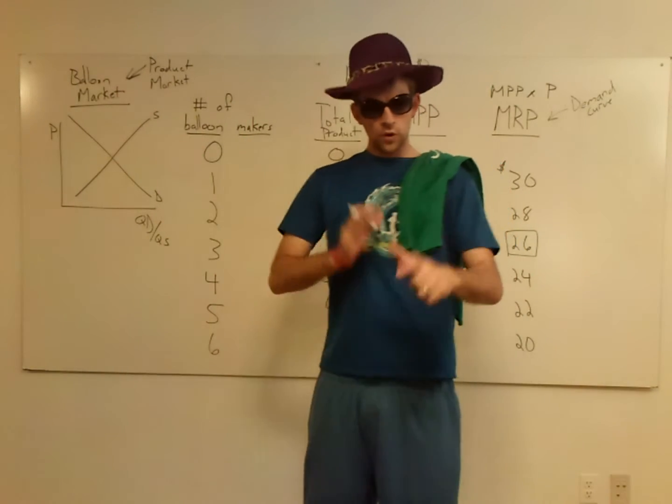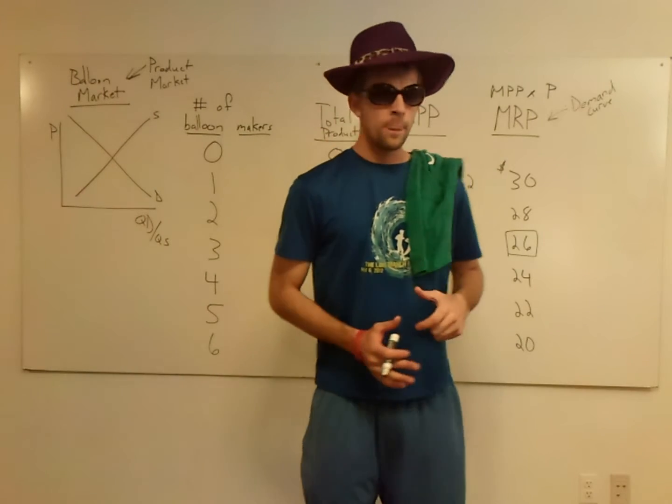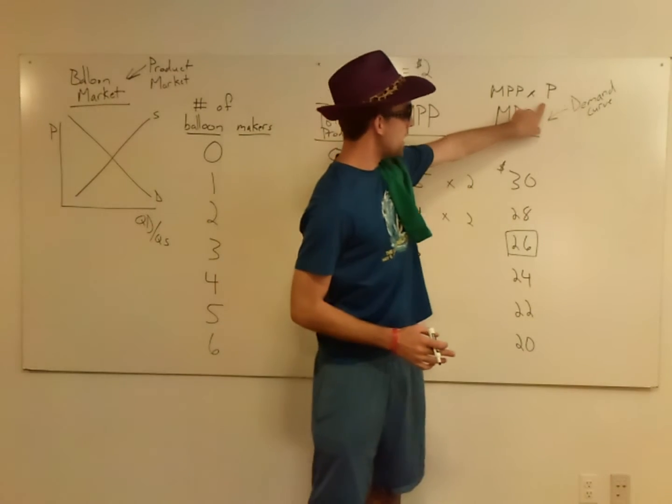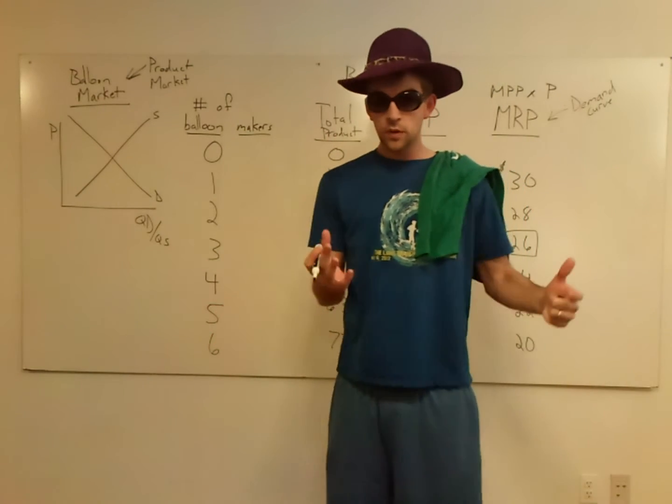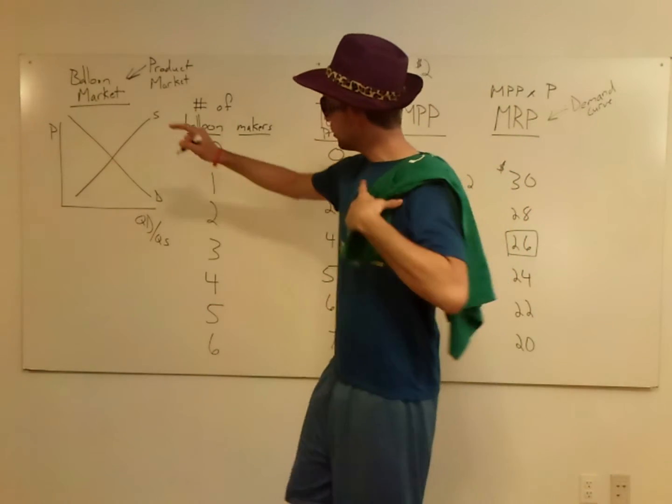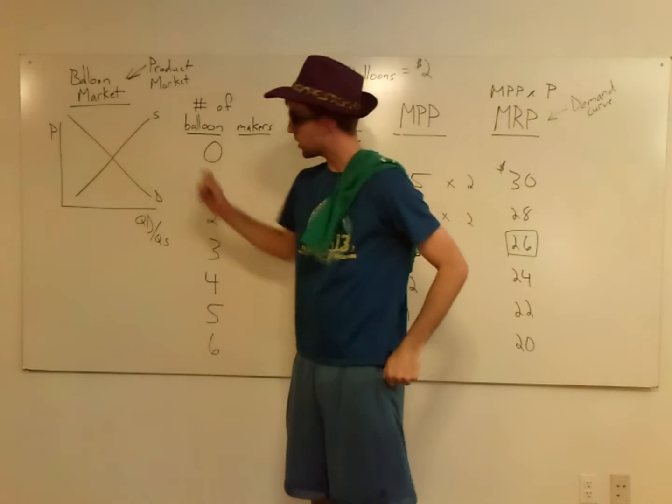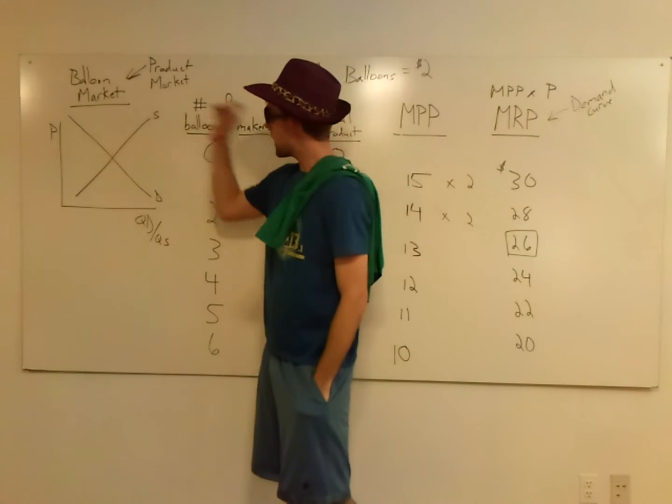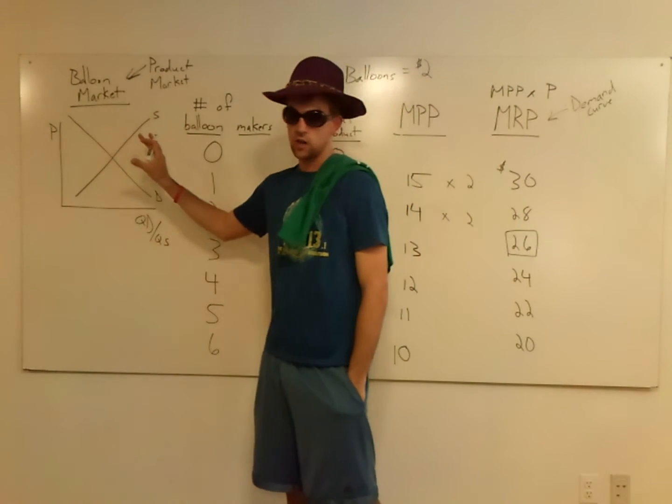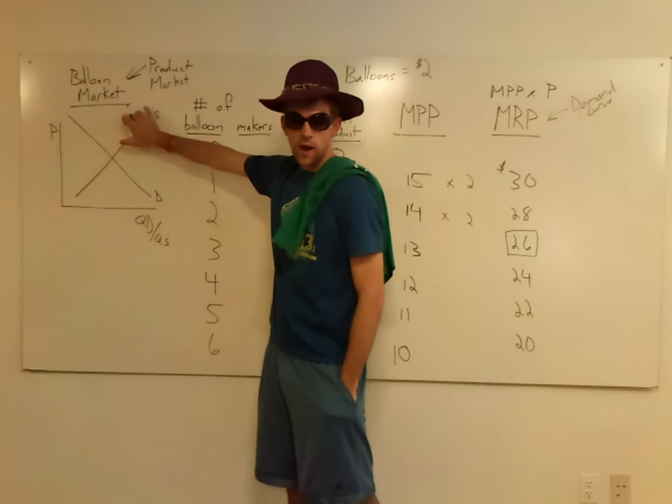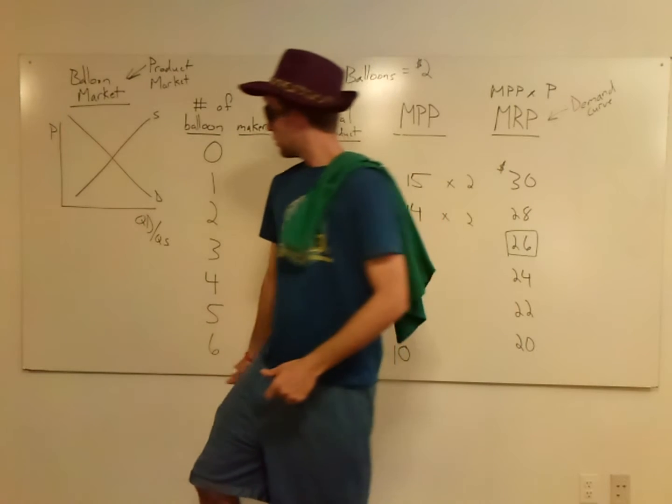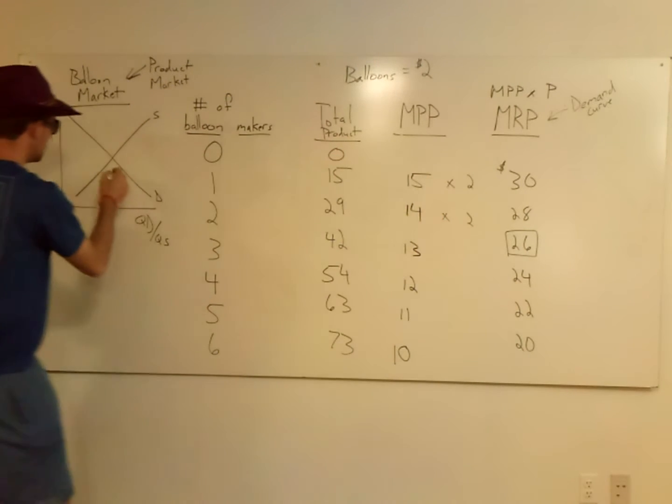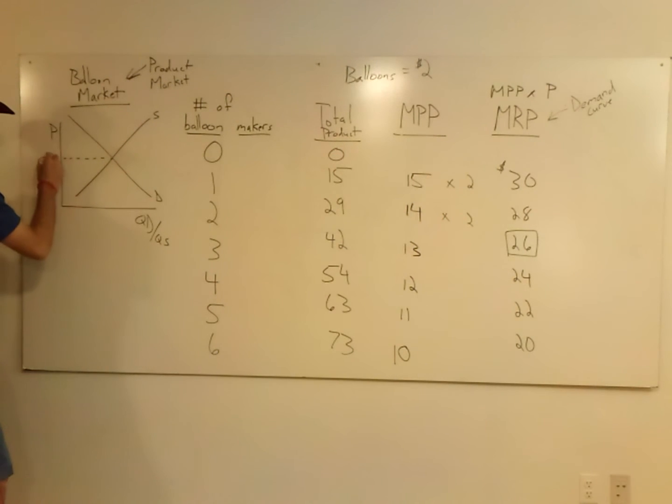So what I did is - and this is one that kind of gets kids a little tricked up here - this price, how do we determine the price of any good or service? Simply supply and demand. If you look over here, I've drawn the balloon market. Notice that this is not the factor market; this is in the product market, with households being buyers. Right now I have the price of balloons at $2.